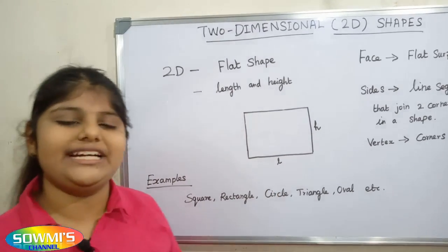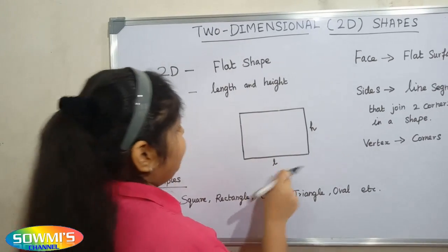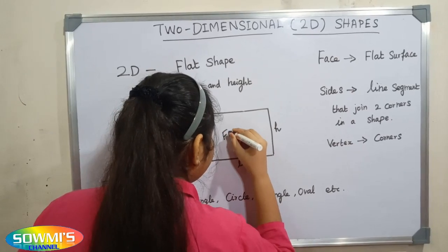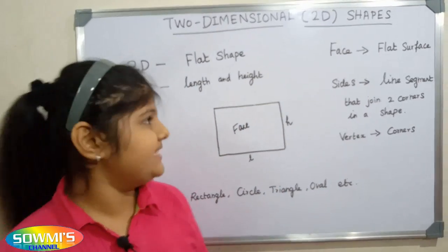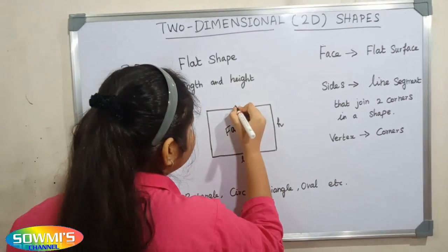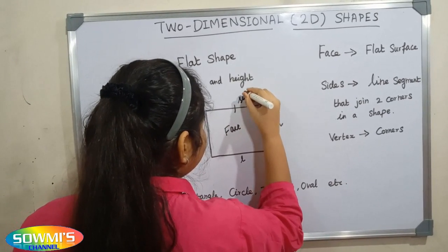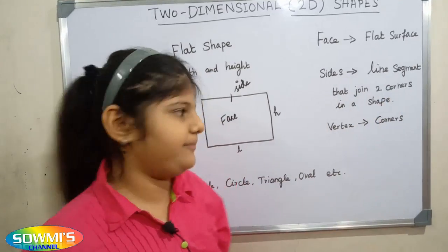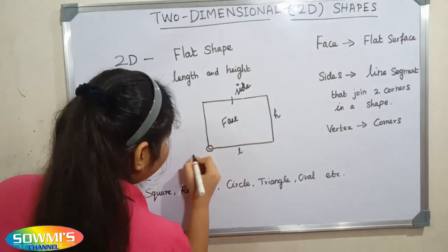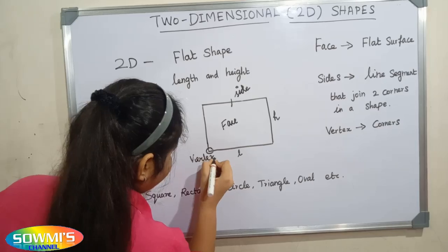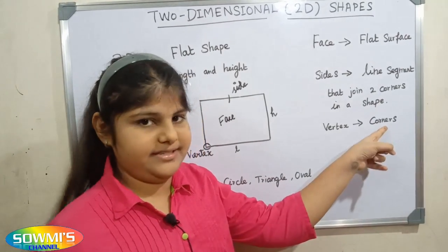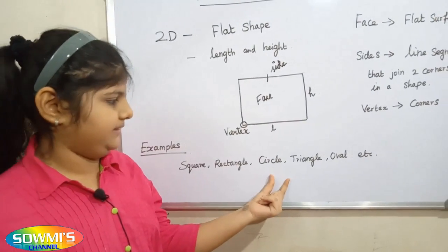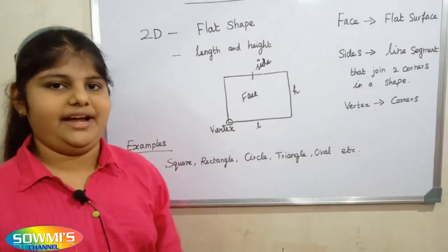It has a flat surface and only two measurements: length and height. This is the face — face means a single flat surface. This is the side — side means a line segment that joins two corners in a shape. This is the vertex — vertex means corners.